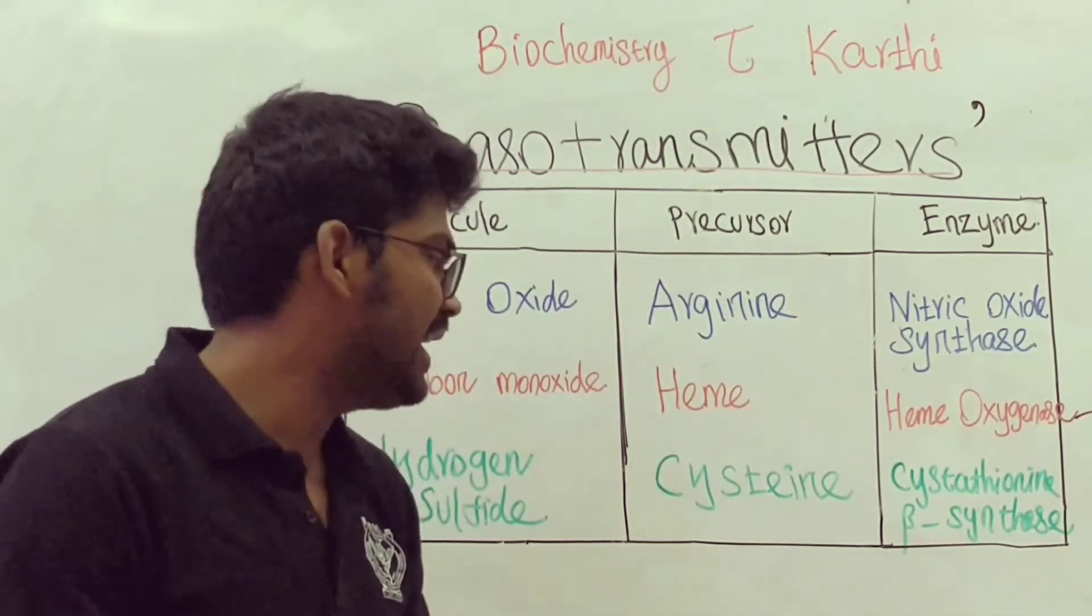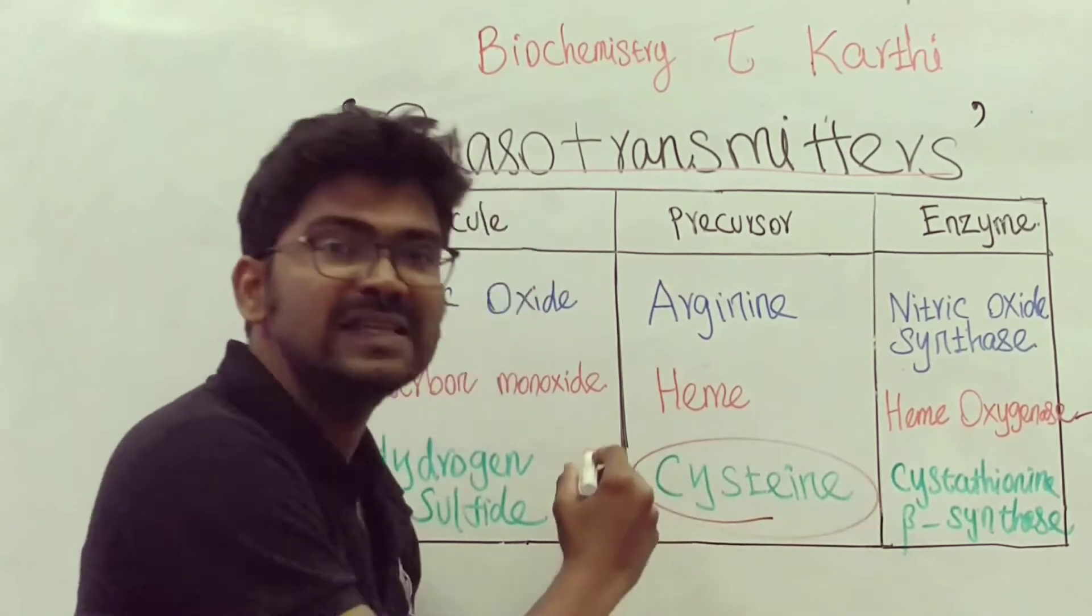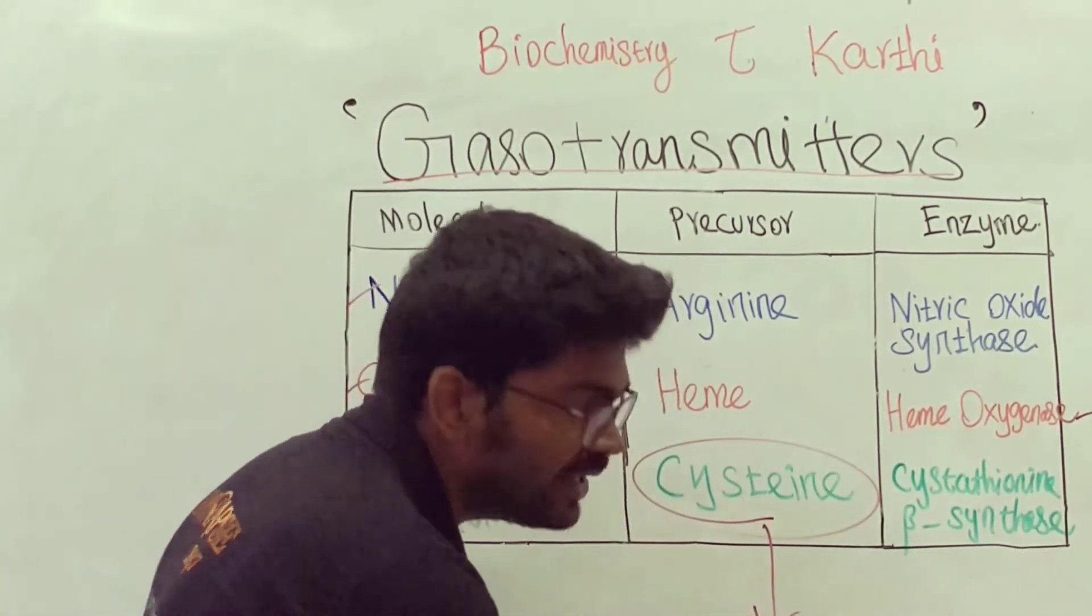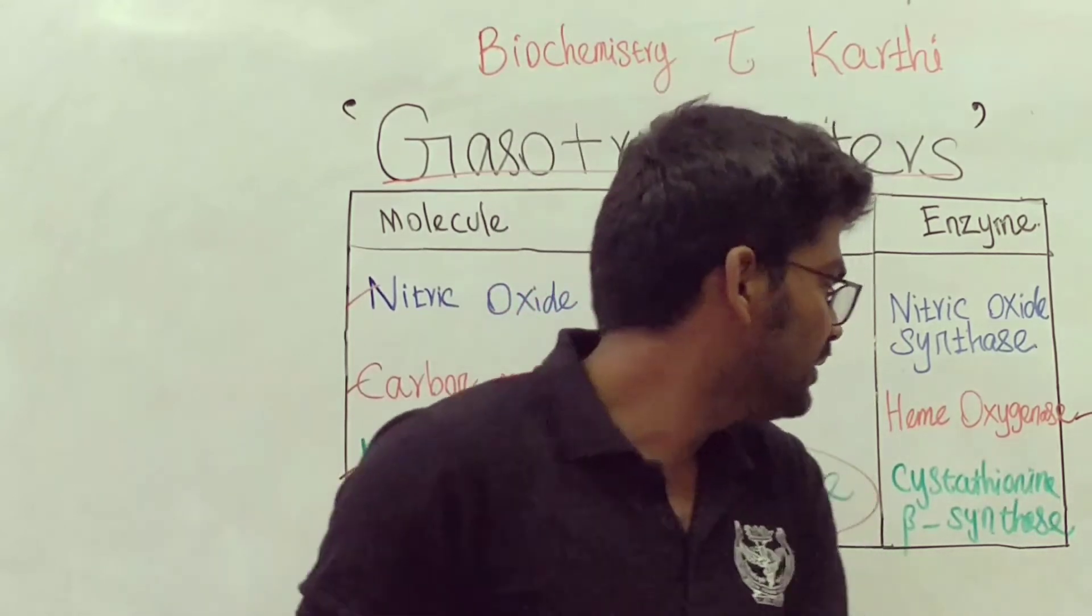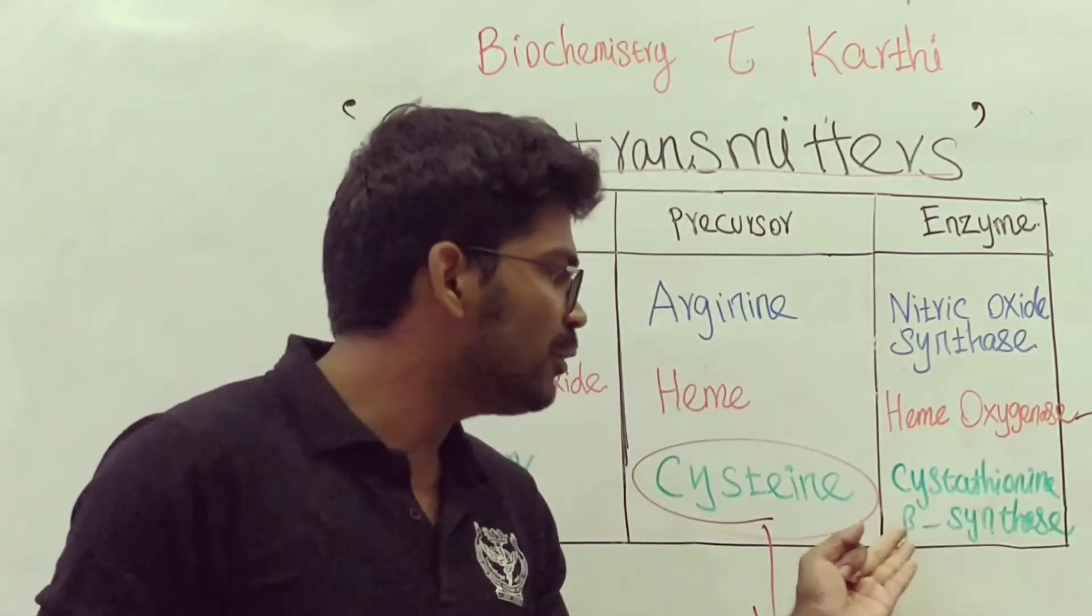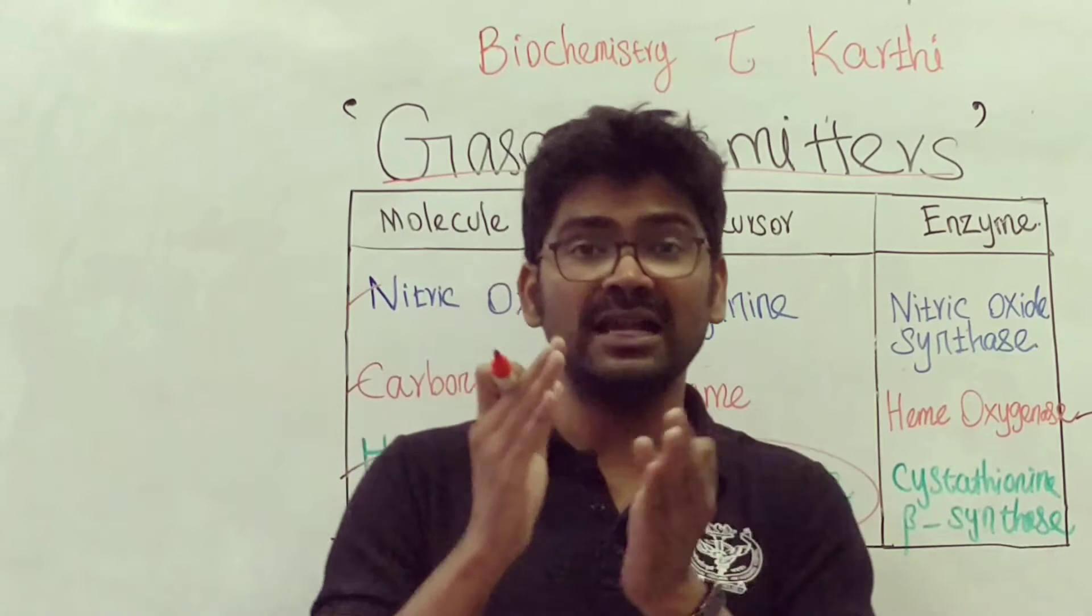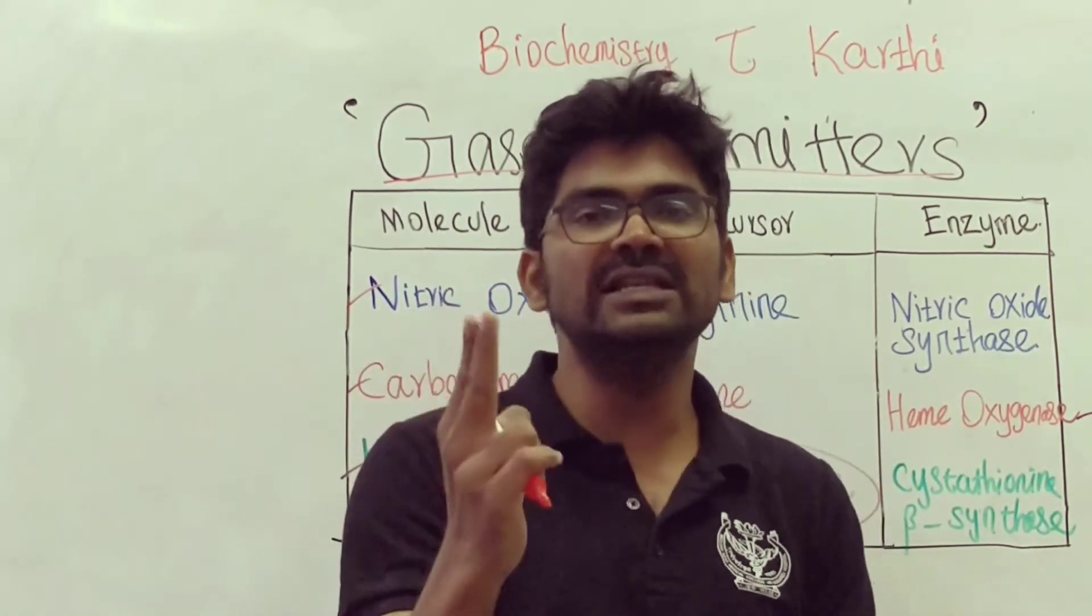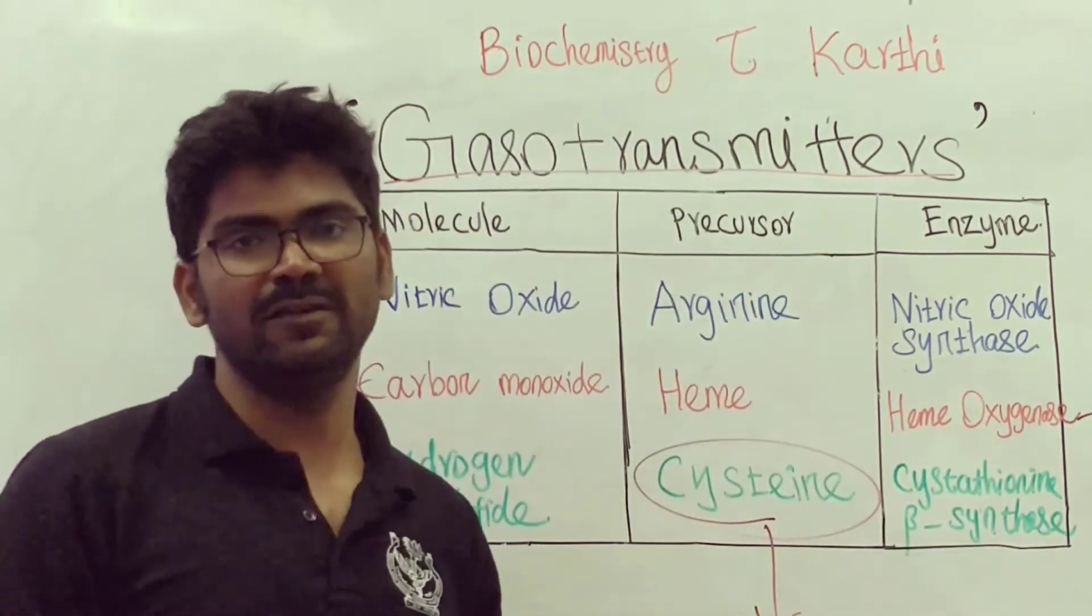Hydrogen sulfide is produced from cysteine. You know cysteine contains sulfhydryl group, S-H group. This is produced by cystathionine beta synthase and cystathionine gamma lyase. Two enzymes can produce hydrogen sulfide.